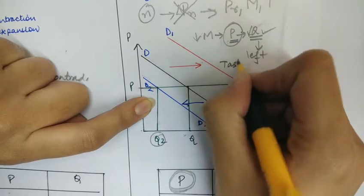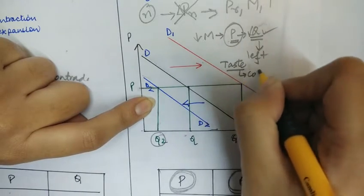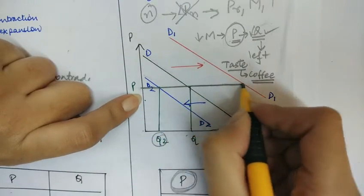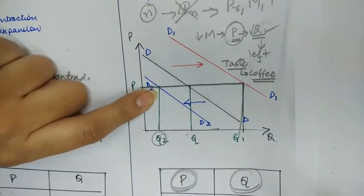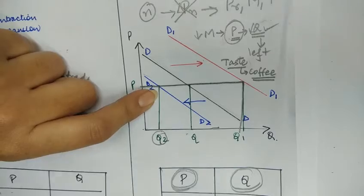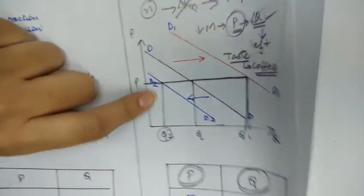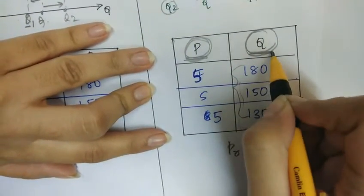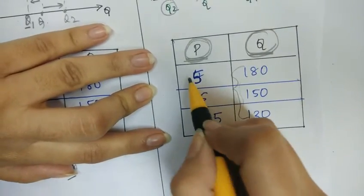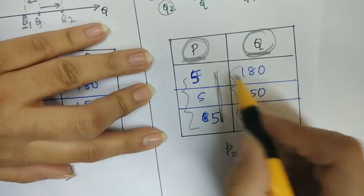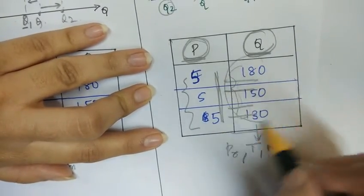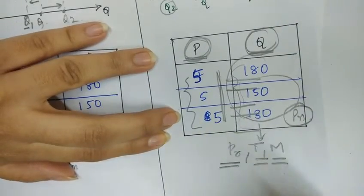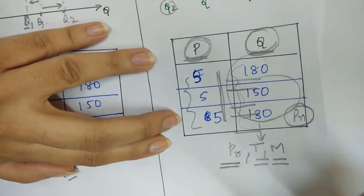For example, if a consumer develops a positive taste towards coffee, they will demand more of it at the same price. In the demand schedule, when the price of the commodity is constant at 5, the quantity demanded changes not because of the price of commodity N, but due to other factors — price of related goods, taste and preferences of the consumer, and income of the consumer.